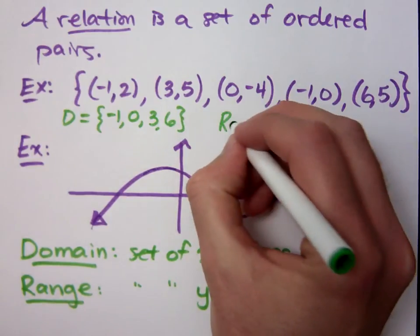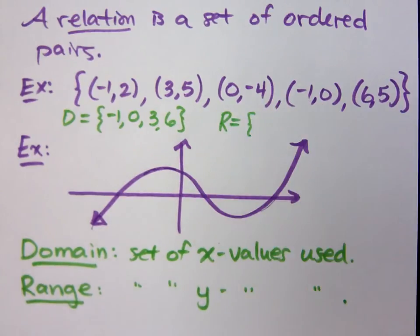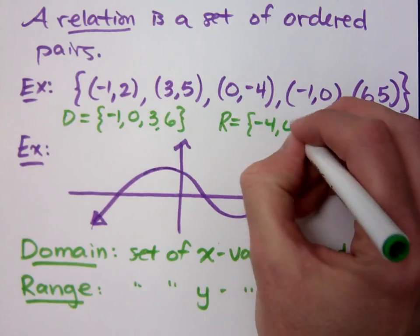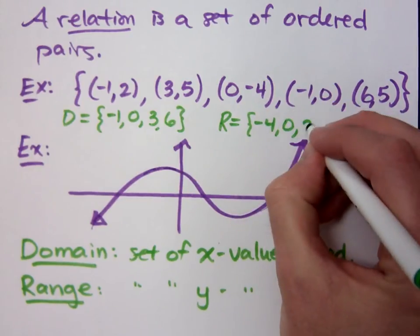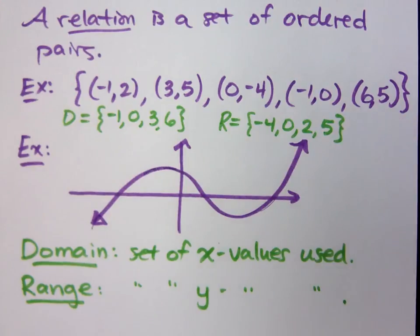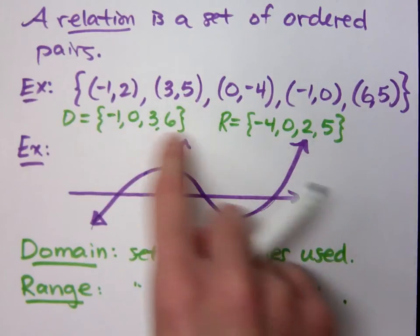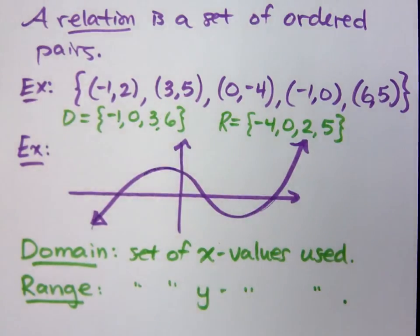And what would you say about your range? What is the set of y values that I'm using in that first relation? Negative 4, 0, 2, and 5. Put them in order. These are the y values that I use. Everybody is represented right here. And you see it from my domain and range.